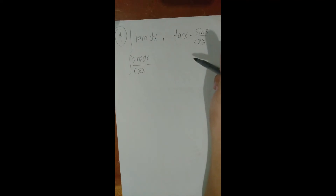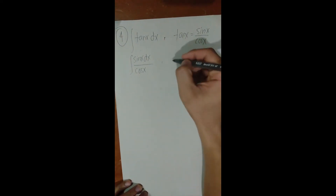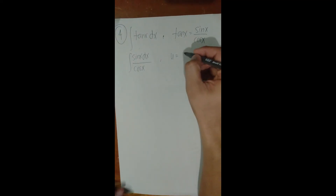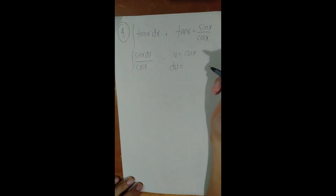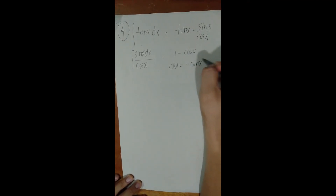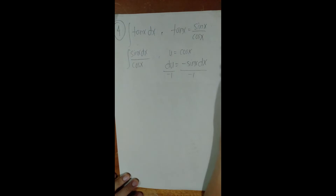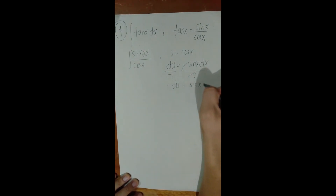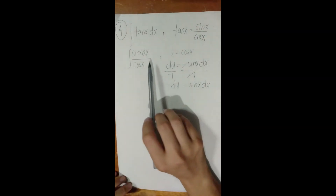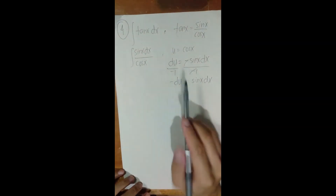From tan(x) dx, we replace it with sin(x) dx / cos(x). Now let u = cos(x). Taking the derivative: du = −sin(x) dx (chain rule). Dividing both sides by −1: −du = sin(x) dx. We verify: sin(x) dx can be replaced by −du and cos(x) by u. The integral becomes the integral of −du/u.